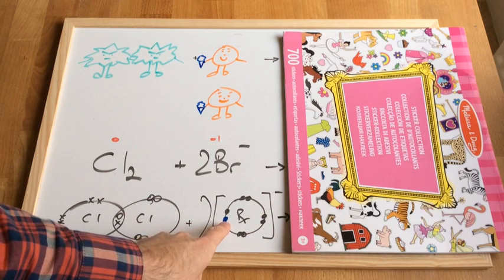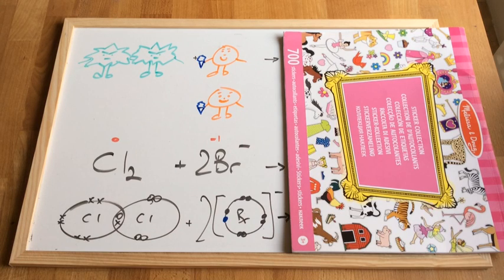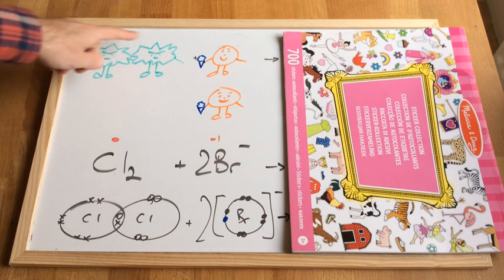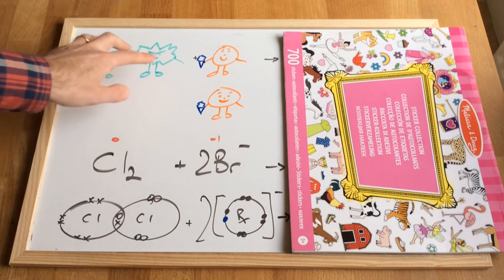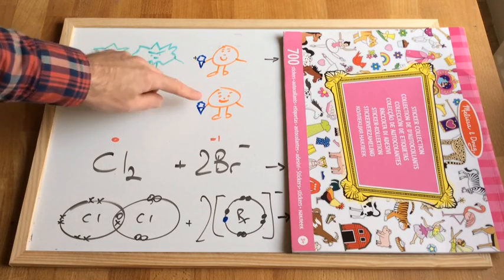You can see the blue dot there represents this extra electron. If we look at the pictures, the chlorine looks a lot meaner than the bromine. So what's it going to do? It's going to steal the ice creams.